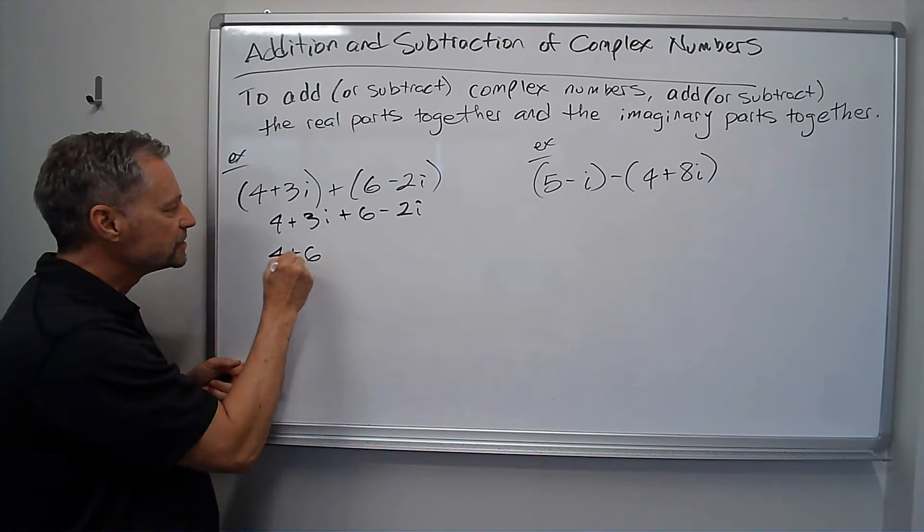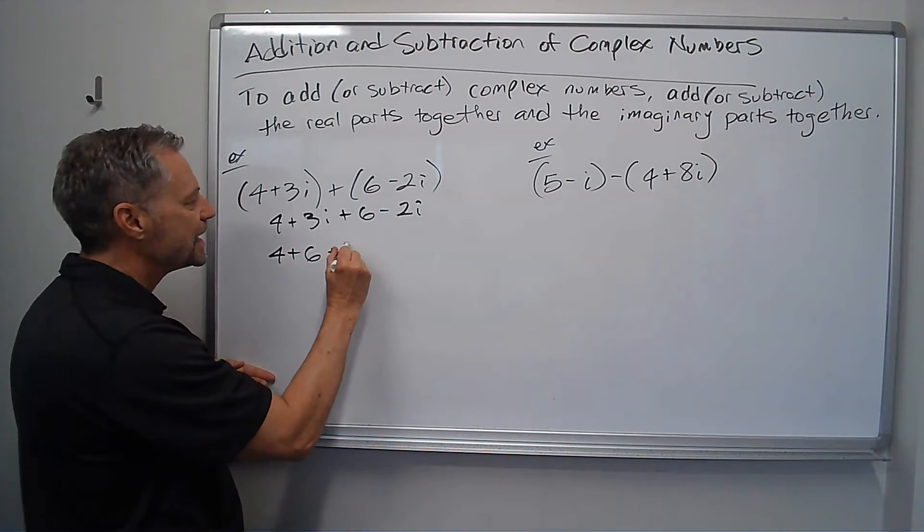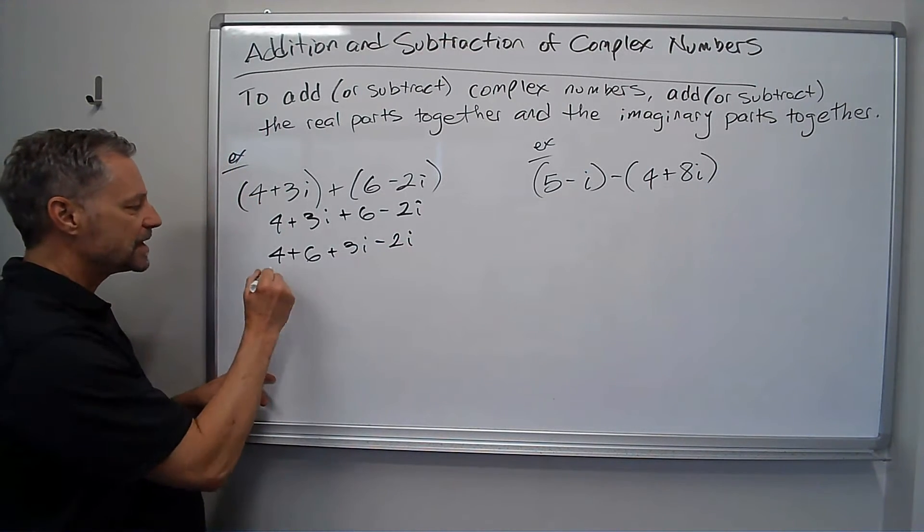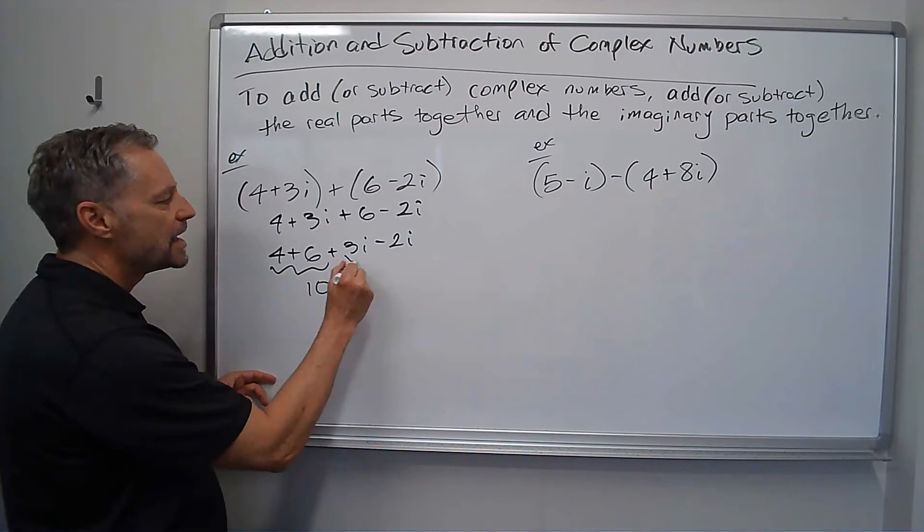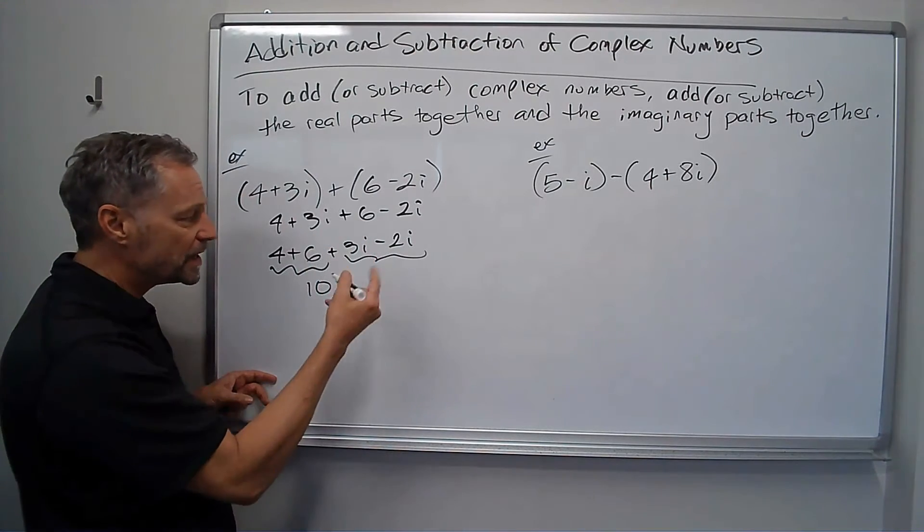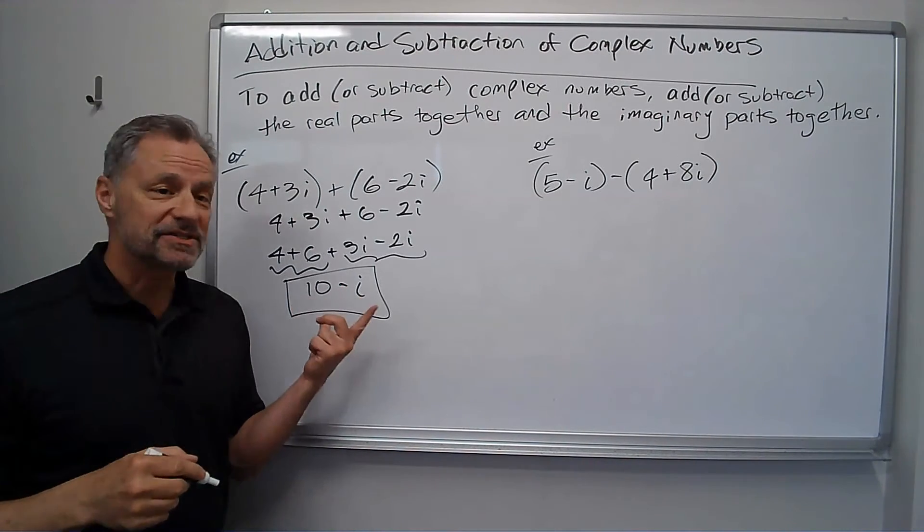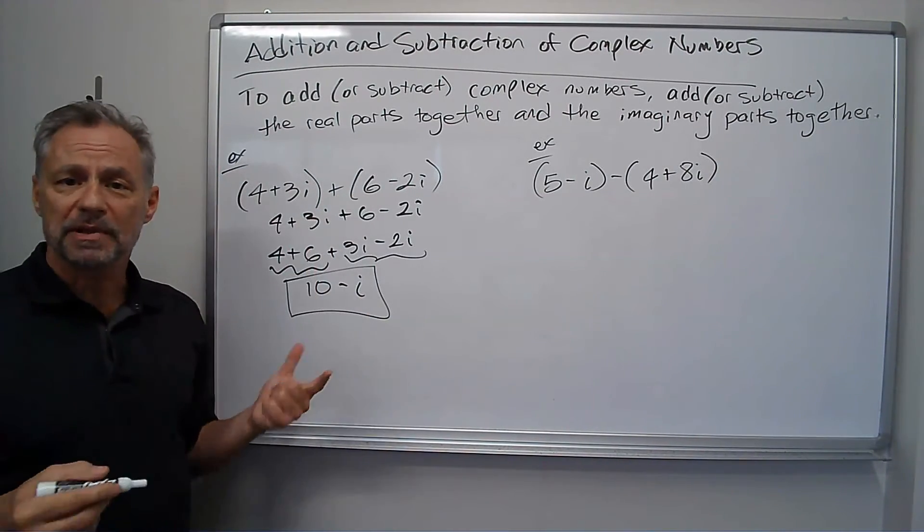So I just put the real parts together, the 4 plus 6, and I put the imaginary parts together. And I add these together, I get 10, and then 3i minus 2i is 1i, or 10 minus i. And that's my answer. It's another complex number by adding two complex numbers together.